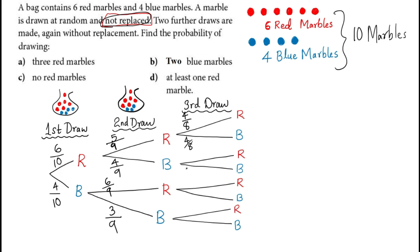Where the probability of red was six over nine, the next probability for red is five over eight. Where the probability of taking a blue was three over nine, the next probability is two over eight. Once you have one of the probabilities, it's easy to find the other because you know the total. The remaining probabilities are five over eight, three over eight, and six over eight. This is how you complete the tree diagram.